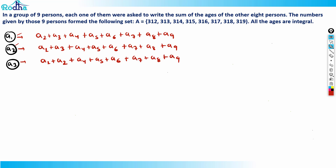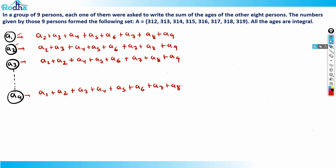We need not write all nine equations explicitly. Similarly, the last person a9 states: a1 + a2 + a3 + a4 + a5 + a6 + a7 + a8. Now let's add all nine equations together.